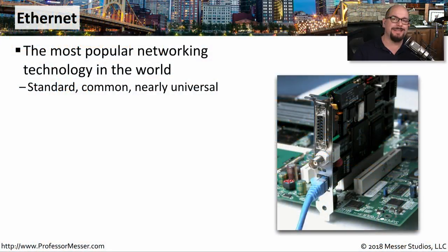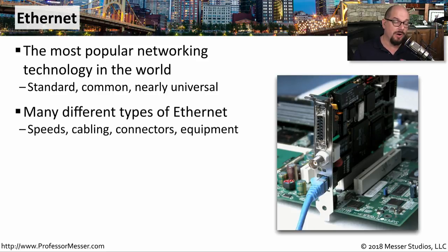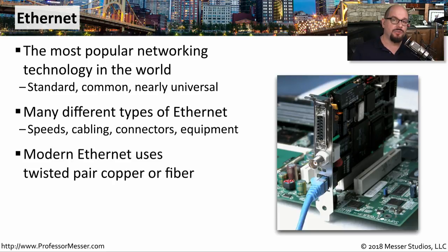By far, Ethernet is the most popular network topology in the world. Somebody has a network, then they have some flavor of Ethernet that they're using in their environment. And there are many different types of Ethernet, running different speeds, different types of cabling, different types of connector, and different types of network switches. In the past, we may have run Ethernet over coaxial cables, but these days most modern Ethernet networks will be using twisted pair cabling or fiber optic.